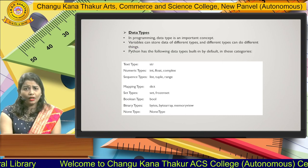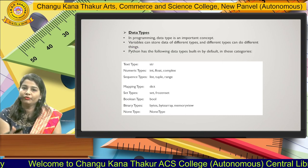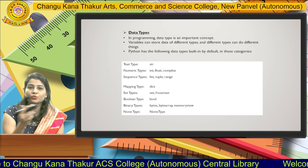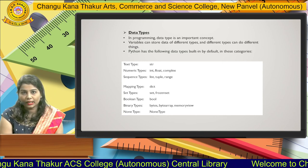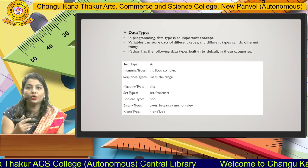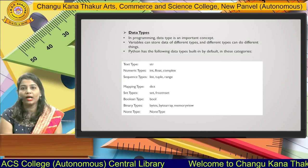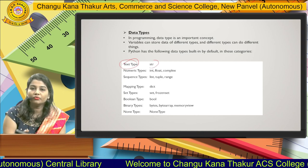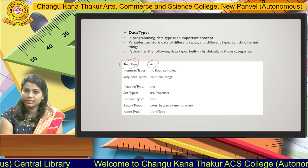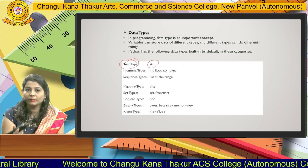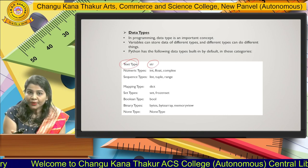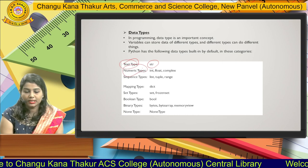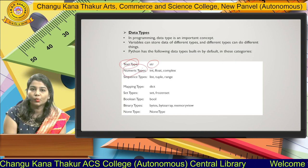Next is data type. Data type is about which type of data you are going to store. For example, if you want to store a name, surname, or address, you use a text data type — you use the string keyword 'str'. If you want to perform addition, subtraction, or mathematical calculations, you use a numeric data type. These are all called data types.